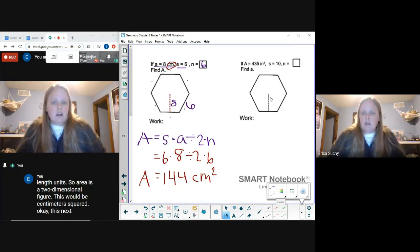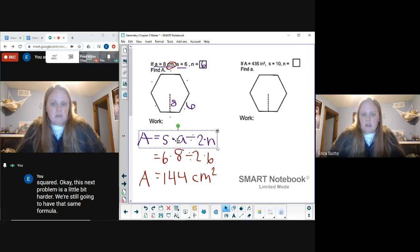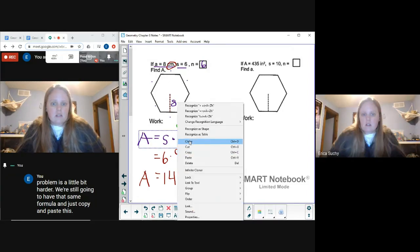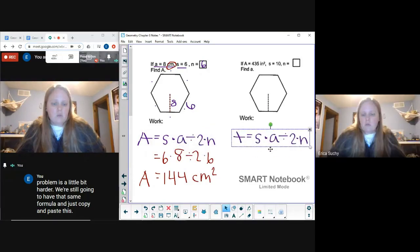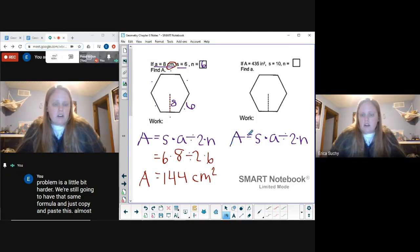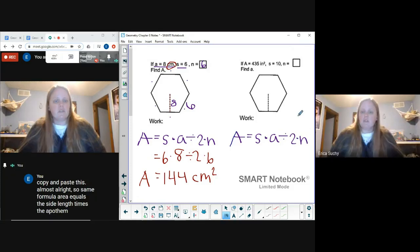Okay, this next problem is a little bit harder. We're still going to have that same formula. Same formula: area equals the side length times the apothem divided by two times the number of sides.